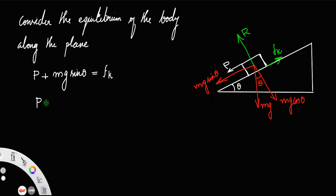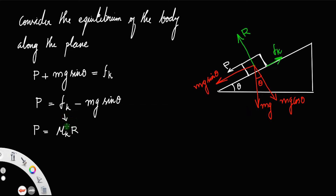The forces down the plane must equal the forces up the plane, that is fk, where fk is the force acting upward. Therefore, P will be fk minus mg sin theta. Also, friction fk equals mu k times the normal reaction, so P equals mu k times the normal reaction minus mg sin theta. Let us call that equation number one.